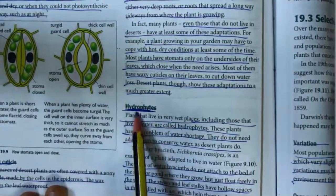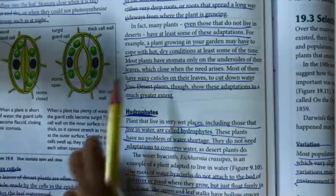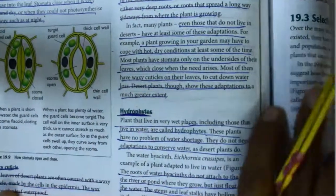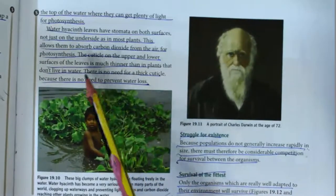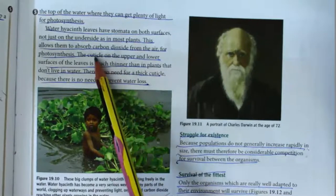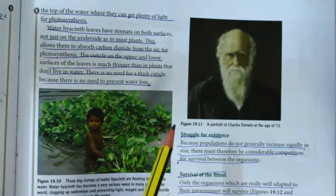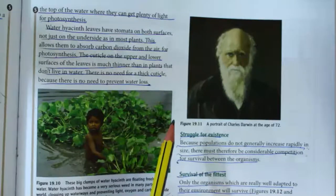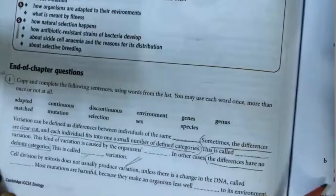Hydrophytes are the opposite of xerophytes — they live in wetlands or water. They have wide leaf surface areas, many stomata that remain open, and a thin or absent waxy cuticle. The waxy cuticle in normal plants is waterproof because wax is non-polar and water is polar, acting as a barrier. Hydrophytes don't need this barrier.